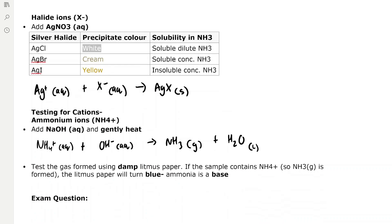To test for halide ions we need to add silver nitrate or AgNO3 and this provides Ag plus ions which react with the halide ions present in a sample. If there's chloride ions present a white precipitate forms. If there's bromide ions present a cream precipitate forms and if there's iodide ions present a yellow precipitate forms. These precipitate colours can be quite difficult to differentiate.